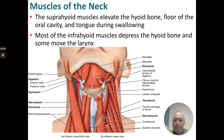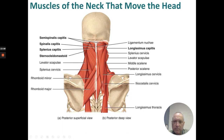Muscles of the neck: the suprahyoid muscles elevate the hyoid bone; the infrahyoid muscles depress the hyoid bone. We have the digastric — with two bellies — stylohyoid, sternohyoid, omohyoid, thyrohyoid, and mylohyoid. Muscles of the neck that move the head include: semispinalis capitis, spinalis capitis, splenius capitis, sternocleidomastoid, and longissimus capitis.